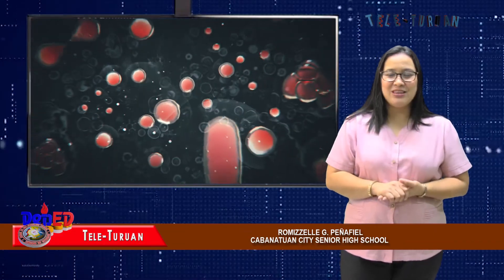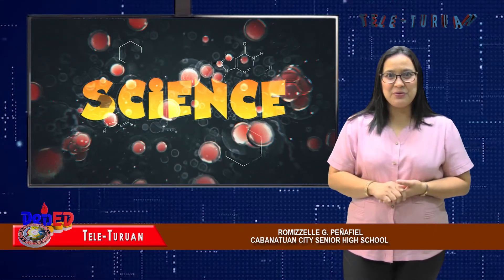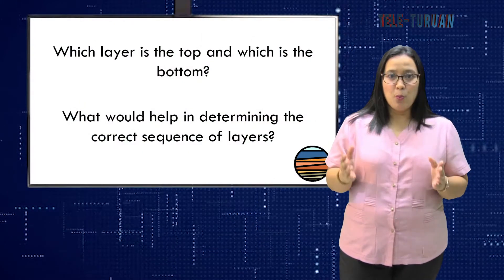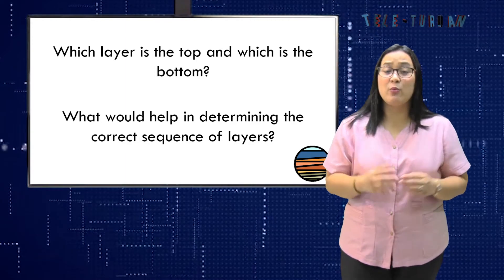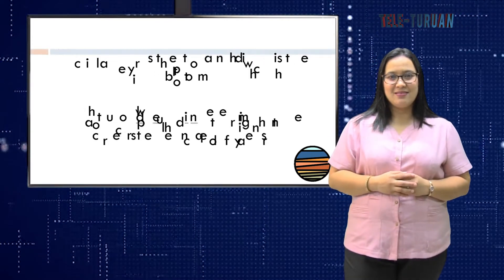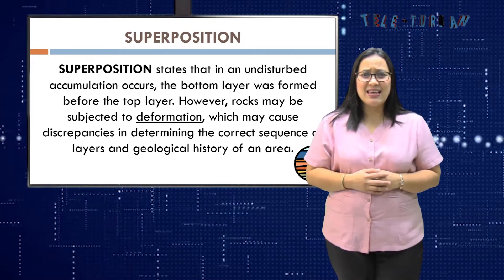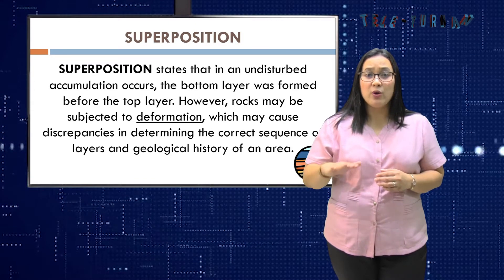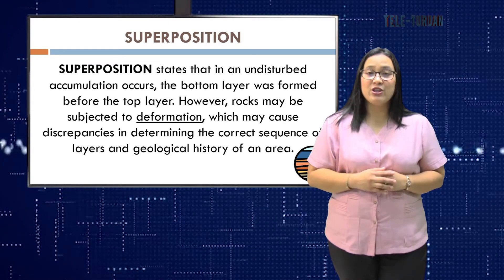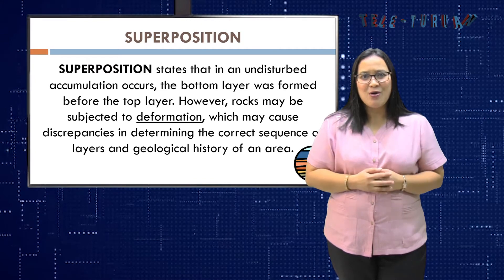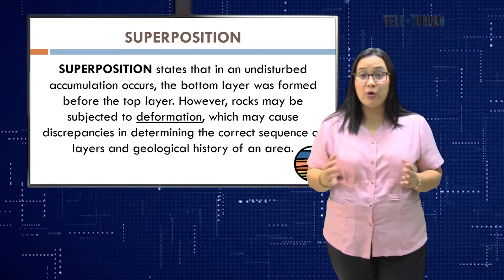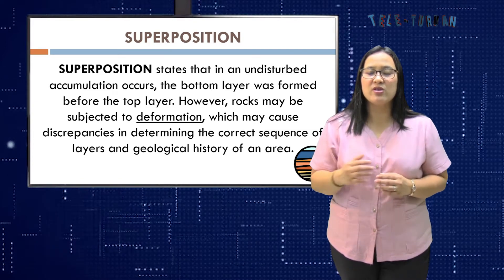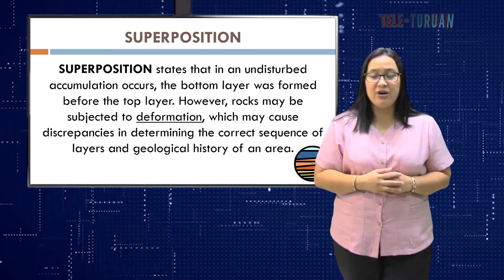Welcome back to Deped Teleturoan. Let us continue. Which layer is the top and which is the bottom? What do you think would help us in determining the correct sequence of layers? Superposition states that in an undisturbed accumulation, the bottom layer was formed before the top layer. However, rocks may be subjected to deformation, which may cause discrepancies in determining the correct sequence of layers and geological history of an area.